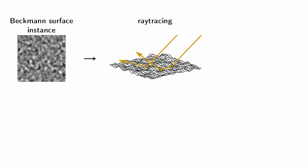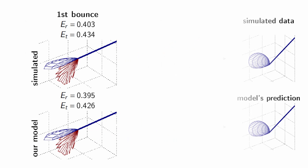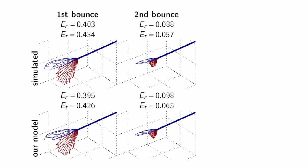We generated random surfaces with known Beckmann statistics and did a ray tracing simulation on them. By comparing the predictions of our multiple scattering model to the results of the ray tracing simulation, we found our BSDF model to accurately predict both the albedo and angular distribution of the incident energy among the scattering orders.